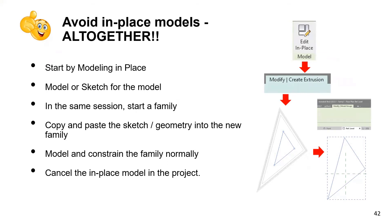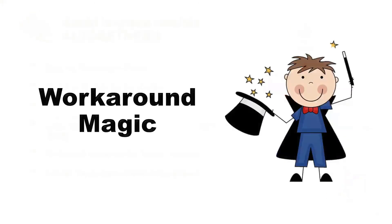One complaint against Revit families is you can't create them in context. If you have a wedge-shaped space and need a custom island that follows the wall layout, here's what you can do: while in In Place mode, sketch or model the geometry, then copy-paste it into the family editor. Apply constraints and parameters, cancel the in-place model, and then use the family normally.